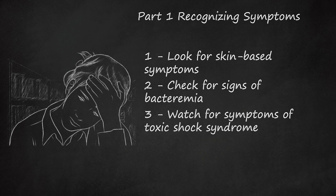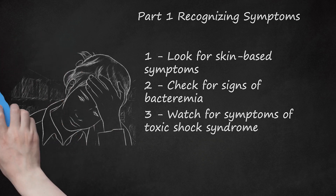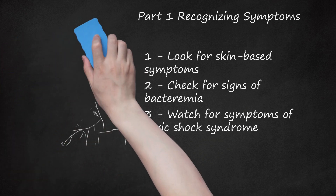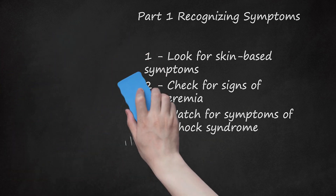Symptoms of toxic shock syndrome include: high fever, muscle soreness, abdominal pain, nausea, vomiting, and diarrhea.